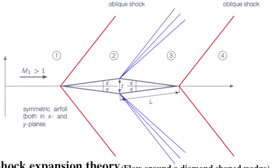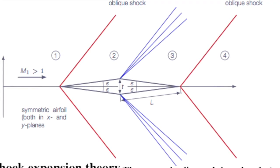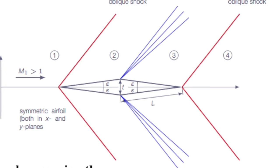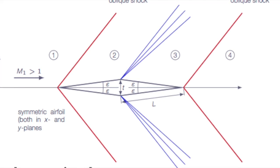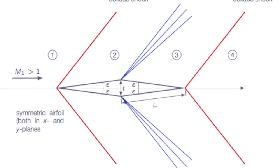At mid chord, the flow is expanded through an angle of 2E by the expansion wave. Hence, the surface pressure on segments A and C are found from oblique shock theory and on segments B and D from Prandtl-Meyer expansion theory.